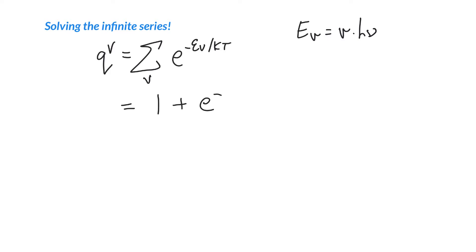So it's e to the minus h nu over kT plus e to the minus 2 h nu over kT. So if v equals 2, we get that energy there. When v equals 3, we get e to the minus 3 h nu over kT and so on. So we've got ourselves a series here.